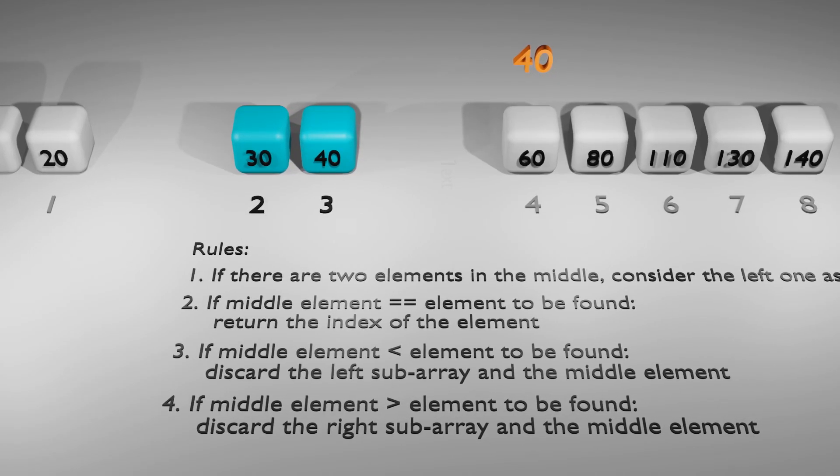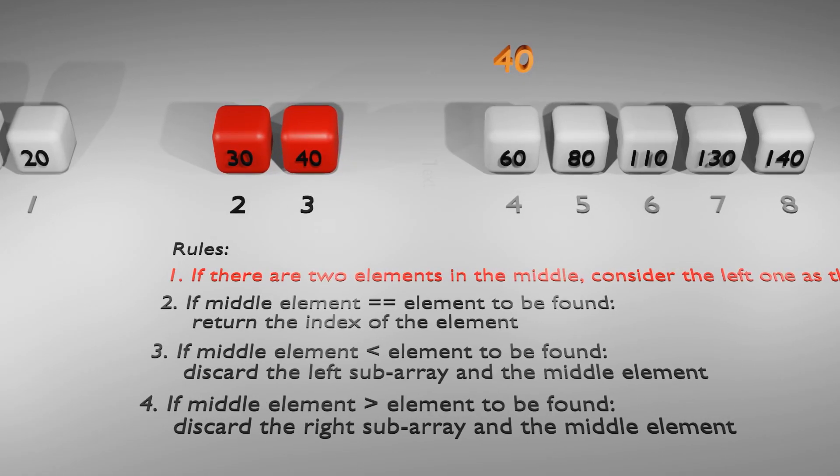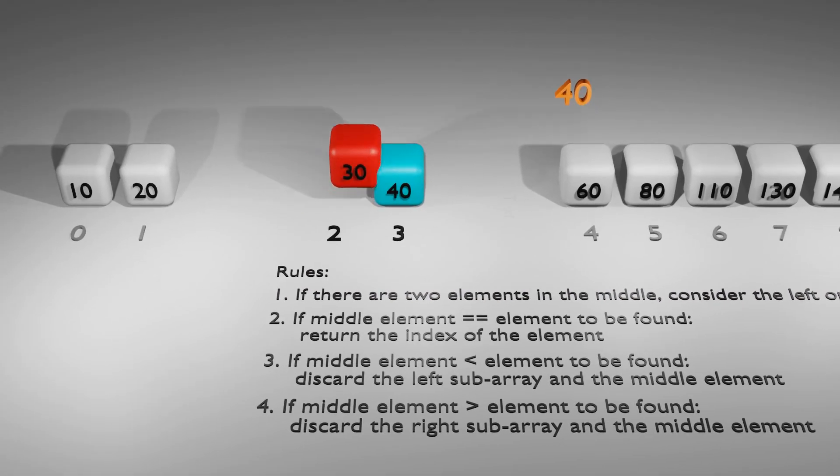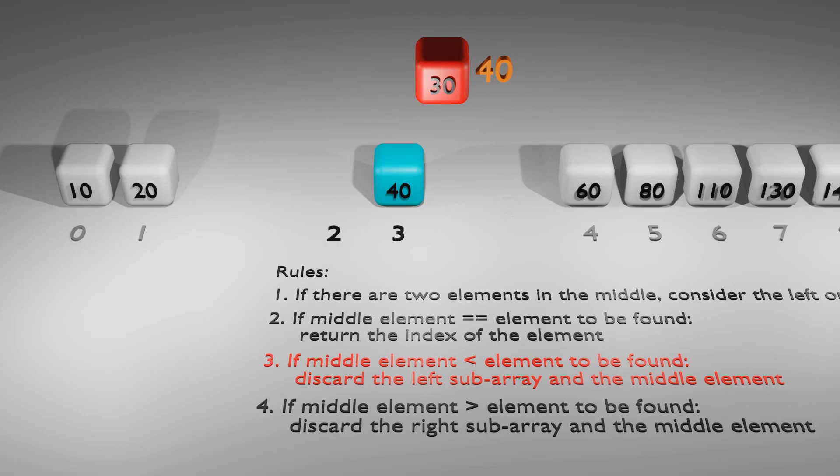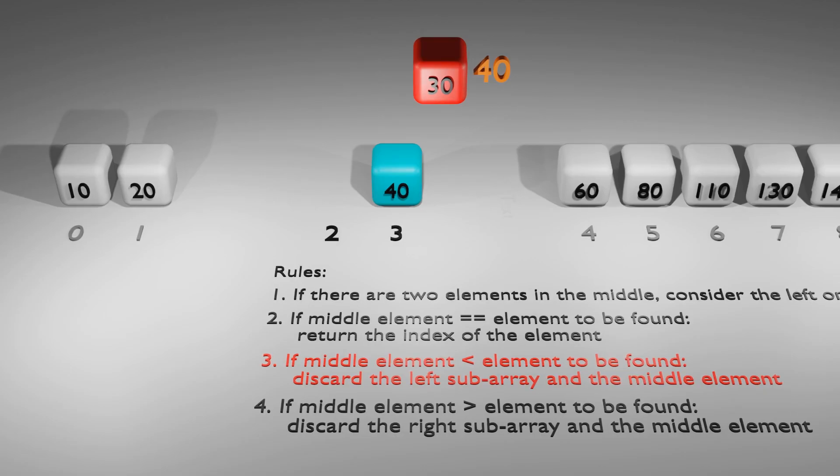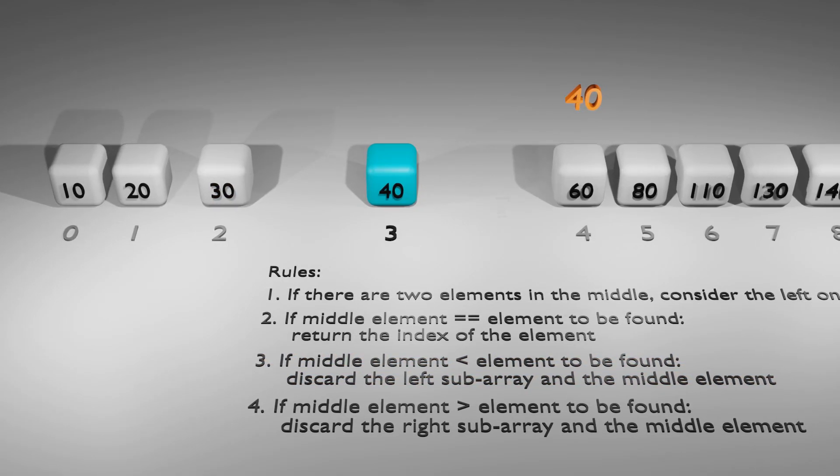Now we have an array consisting of only two elements. We find a new middle number. Considering both elements in the array as middle elements, rule number one applies here, and we consider the left one as the middle element. We compare it with 40 and see that the middle element is smaller. Thus, rule number three applies here. We choose the right sub array. We discard the middle element, which is 30 and the left sub array.